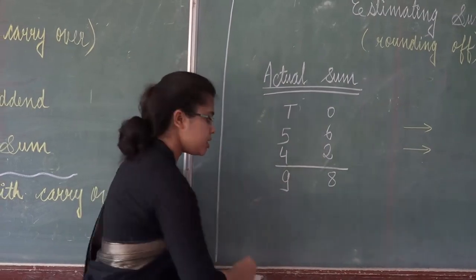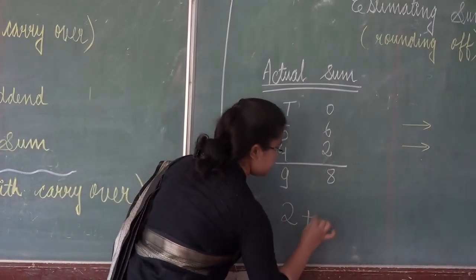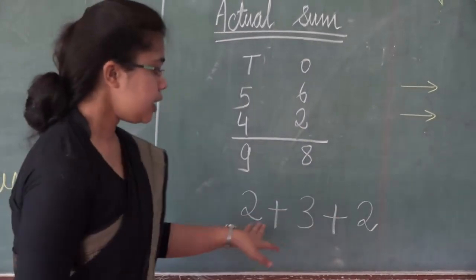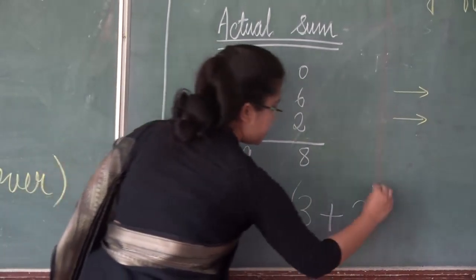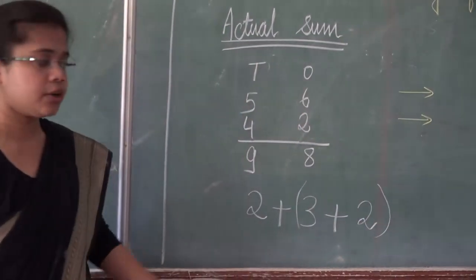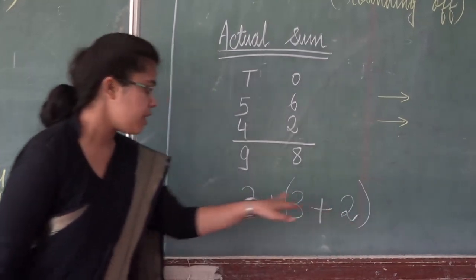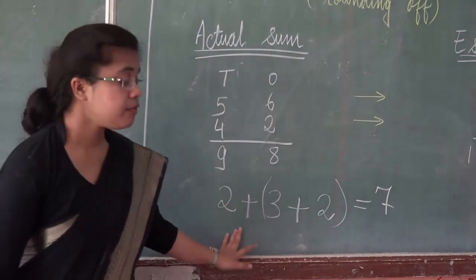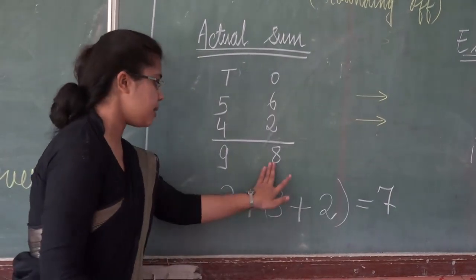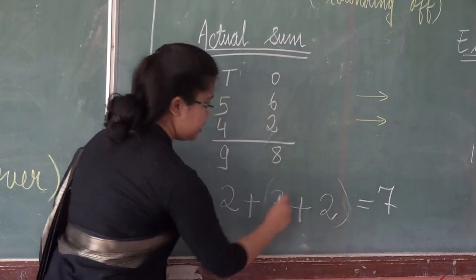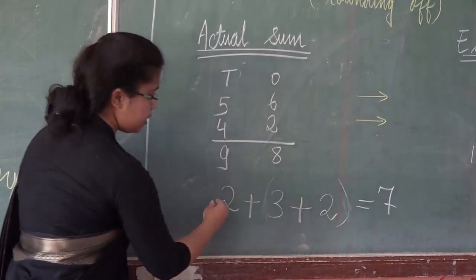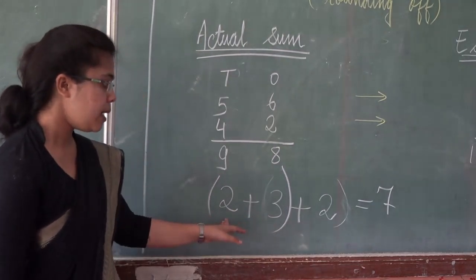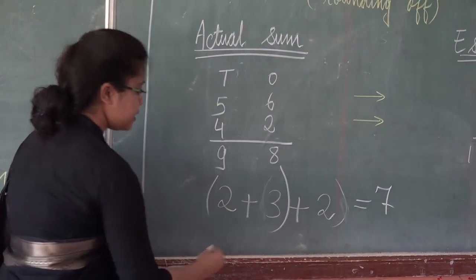Next one is grouping property. Suppose if I give you the numbers like 2 plus 3 plus 2. So here you need to add this number. Now let us put these two numbers in one group. So 3 plus 2 is 5, 5 plus 2 is 7. Again even if we change the group, 2 plus 3 is 5, plus 2 is 7.